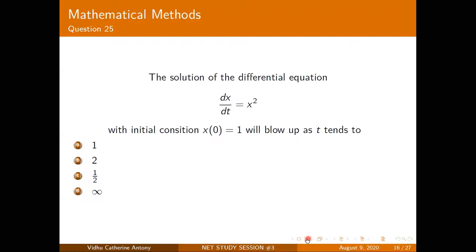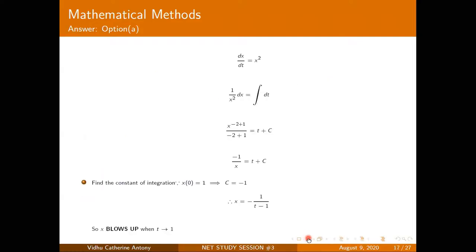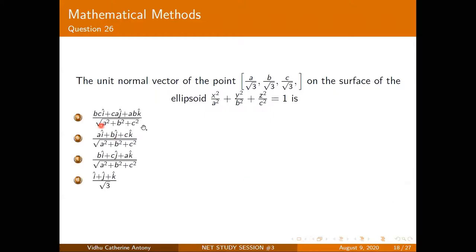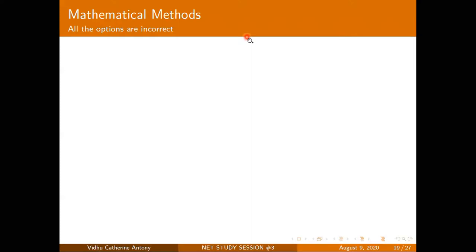Moving on to the next question. The answers for this question were incorrectly stated in the official answer key, so grace marks were given. We need to find the unit normal vector at the point (a/√3, b/√3, c/√3) on the ellipsoid x²/a² + y²/b² + z²/c² = 1. To find the normal vector to a surface, take the gradient of the surface function.